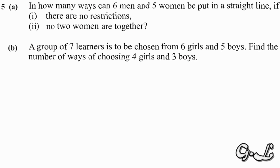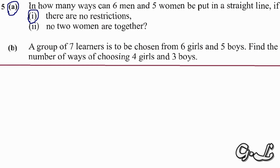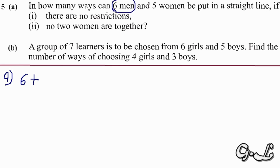We're going to start with part a, roman numeral one. The question asks: how many ways can six men and five women be put in a straight line if there are no restrictions? If there are no restrictions when dealing with men and women, you simply add the numbers. We have six men and five women, so six plus five gives us eleven.